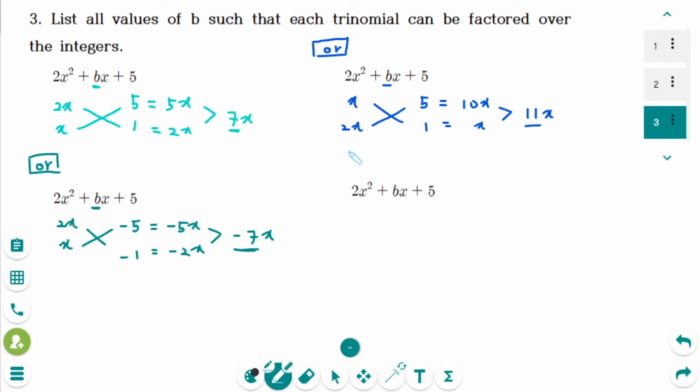Or 2x times x makes 2x squared, and minus 5 times minus 1. So minus 10x minus x together makes minus 11x. So b can be minus 11.